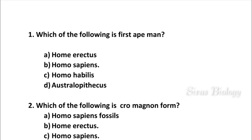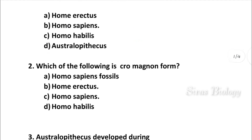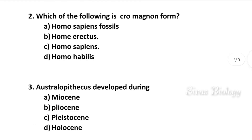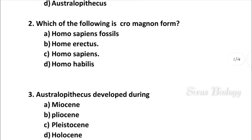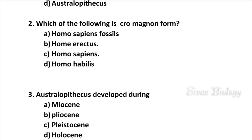Question number 2: Which of the following is the Cro-Magnon form? Options: Homo sapiens fossilis, Homo erectus, Homo sapiens, Homo habilis. The correct answer is Homo sapiens fossilis.